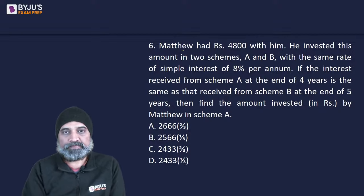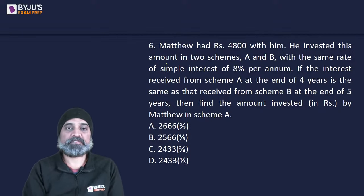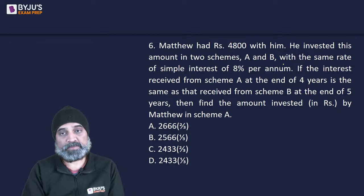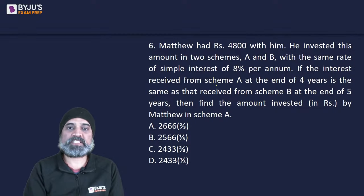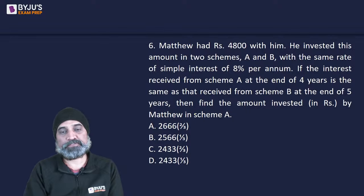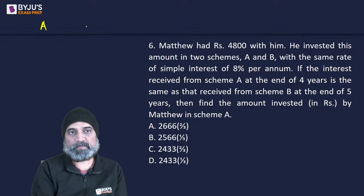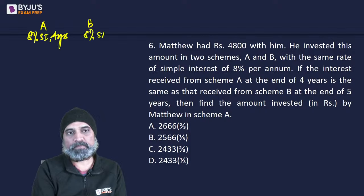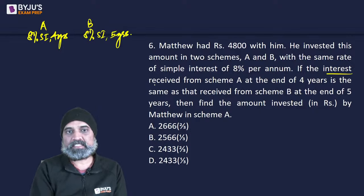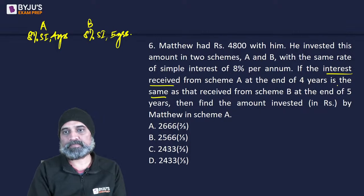Next: Matthew had rupees 4,800 which he invested in two schemes A and B, both at 8% simple interest per annum. The interest from scheme A at the end of 4 years equals the interest from scheme B at the end of 5 years. Find the amount invested in scheme A. Both schemes have the same rate but different tenures — A for 4 years, B for 5 years.